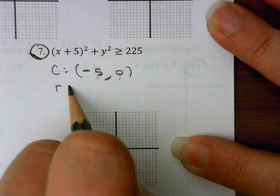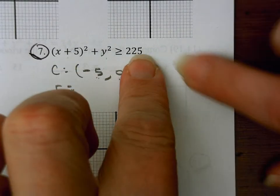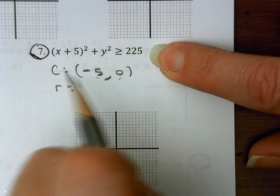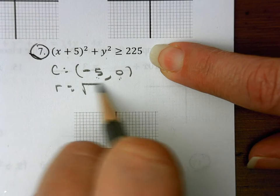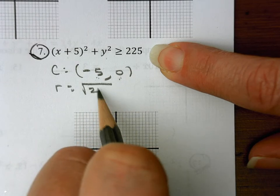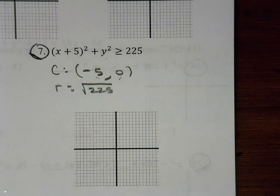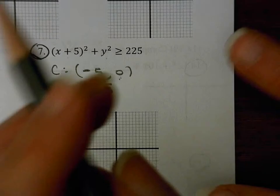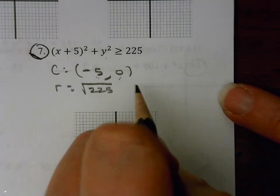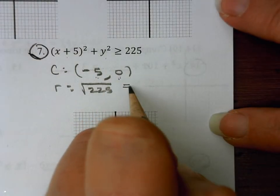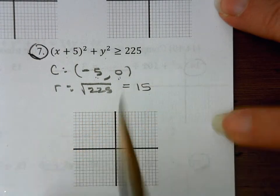For my radius, I look for my constant, which is 225. I want to take the square root of 225 — that's not something you'd know off the top of your head, so you can always use your calculator to help you with that. The square root of 225 is 15.